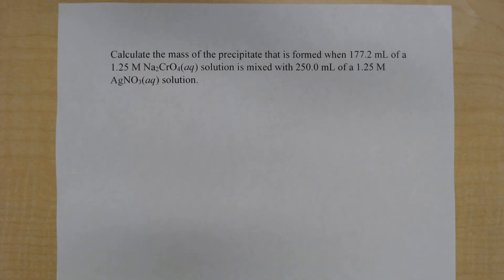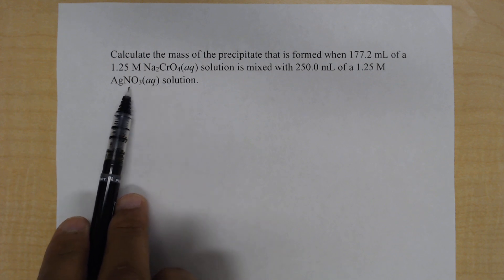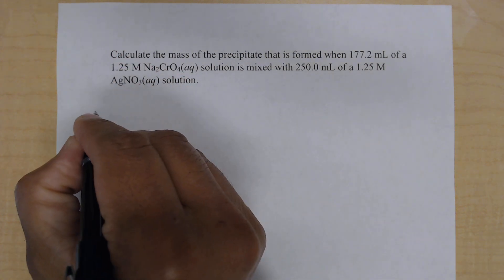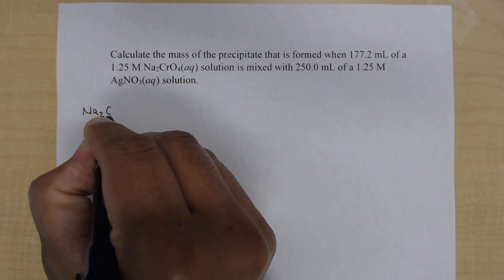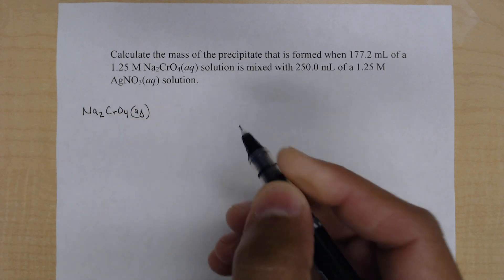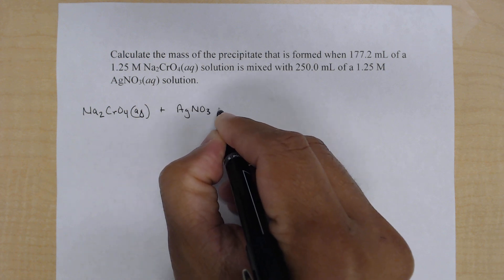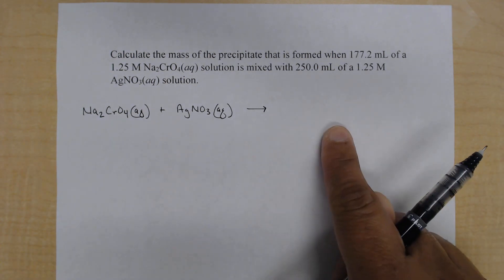We have a reaction happening in solution between the two reactants sodium chromate and silver nitrate. In order to do the stoichiometry of course first we need a balanced equation so let's go ahead and write that down first. So we have sodium chromate aqueous plus silver nitrate aqueous. We'll draw our yield sign and now we need to get our products.